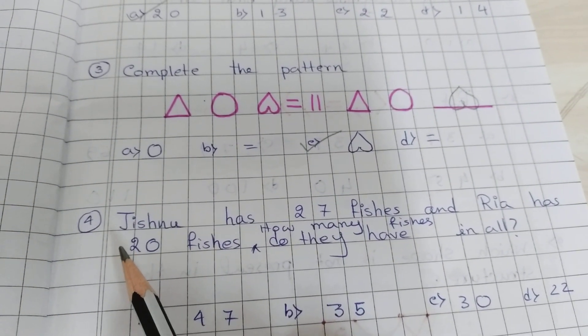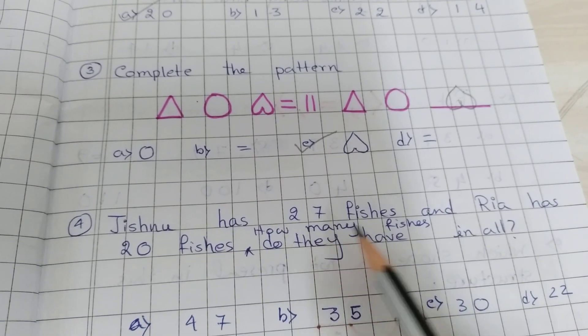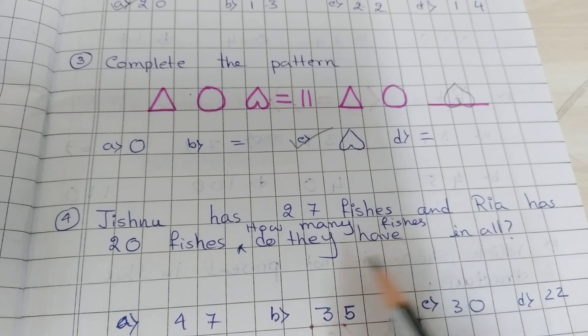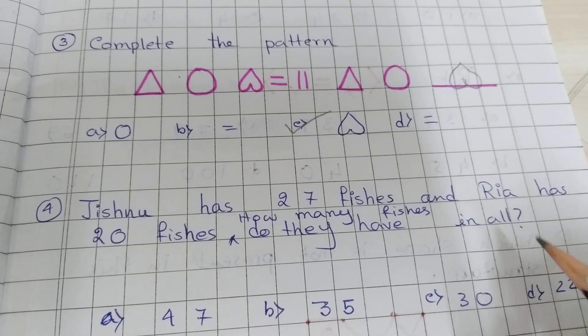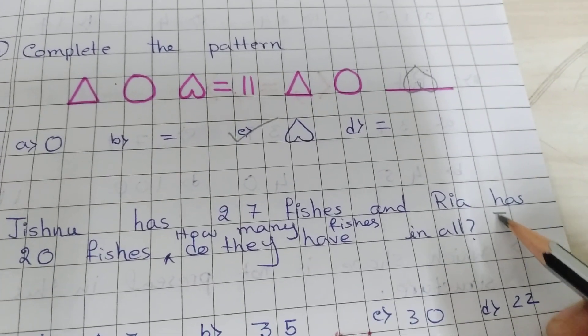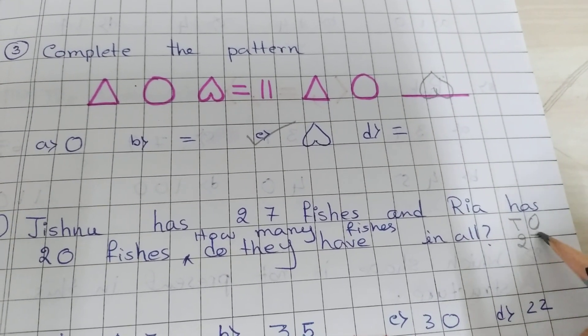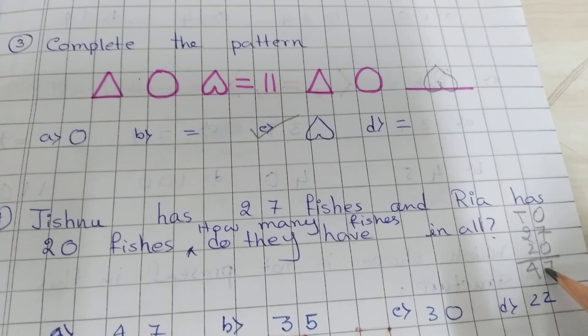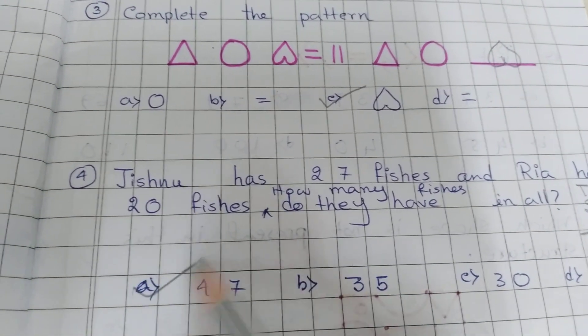Question number 4, Jishnu has 27 fishes and Rhea has 20 fishes. How many fishes do they have in all? So 27 plus 20, 47. Let's see, option A is correct.